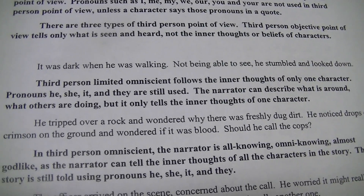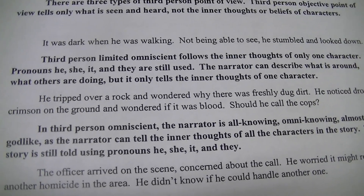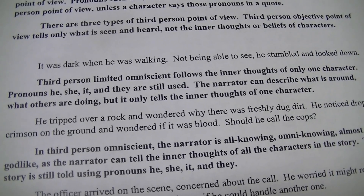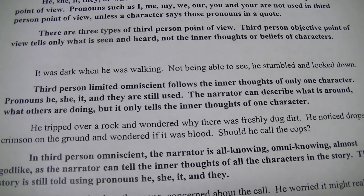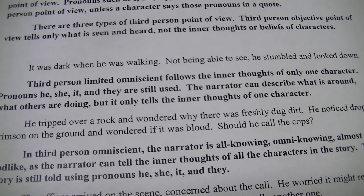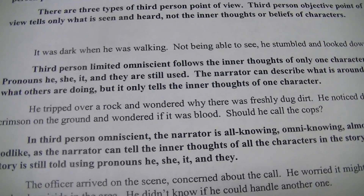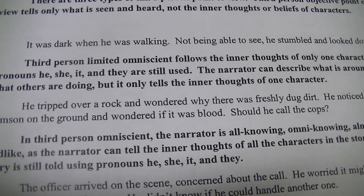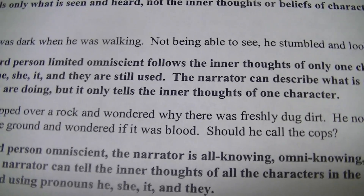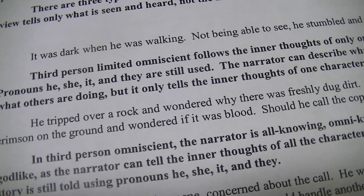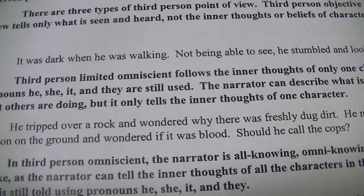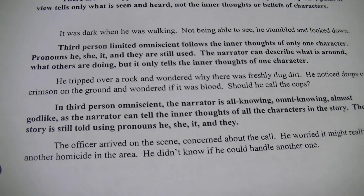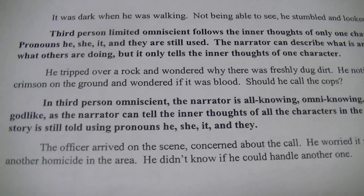Third person limited omniscient follows the inner thoughts of just one character. You're still using he, she, it, they pronouns, but you're only describing what one character can think and see and feel. Think of Alice in Wonderland — we know what she's thinking and feeling, but we don't necessarily know about the other characters unless they tell us. Example: "He tripped over a rock and wondered why there was freshly dug dirt. He noticed drops of crimson on the ground and wondered if it was blood. Should he call the cops?" When we say 'wondered,' we're getting in his head — and because we're only talking about that one person, that makes it limited.